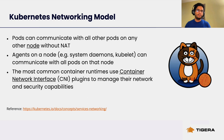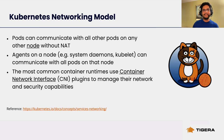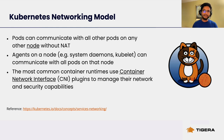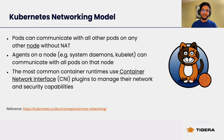Let's have a brief look at the Kubernetes networking model. The model stipulates that pods can communicate with all of the pods on any other node without the requirement for network address translation. Agents on a node such as system daemons and kubelet can communicate with all pods on that node. The most common container runtimes use container network interface plugins to manage their networking and security capabilities, Calico being one of the most widely adopted CNI plugins for Kubernetes.